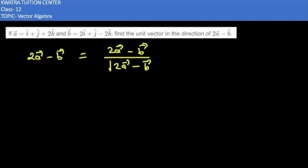That will be 2a vector minus b vector divided by the magnitude, the absolute value of 2a vector minus b vector.